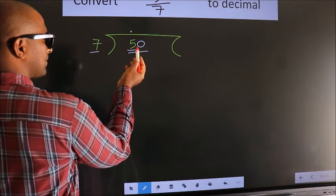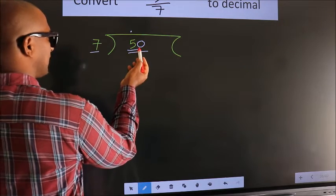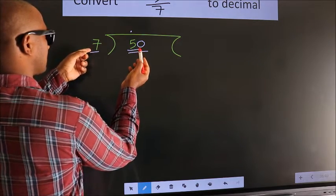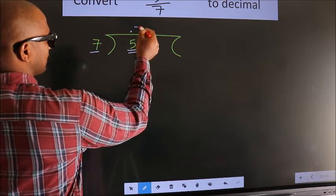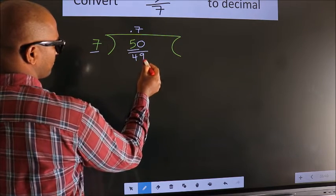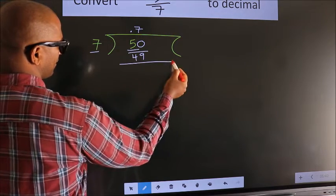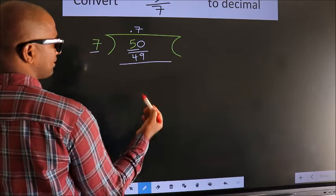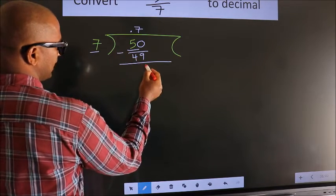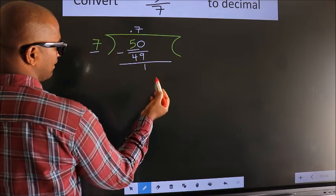A number close to 50 in the 7 times table is 7 sevens: 49. Now we should subtract. We get 1.